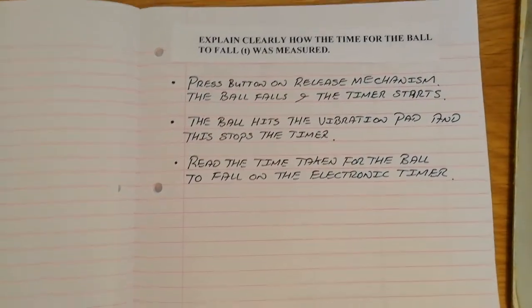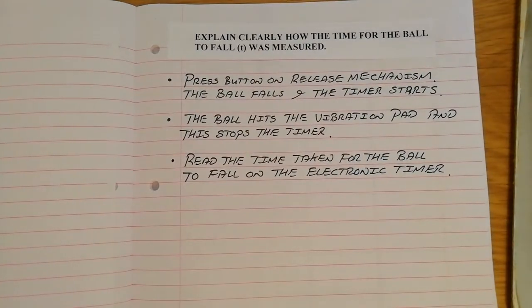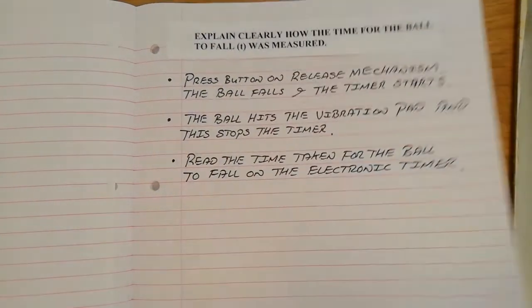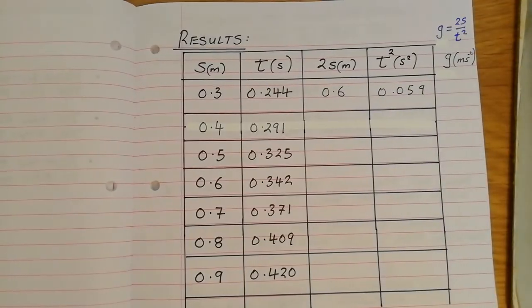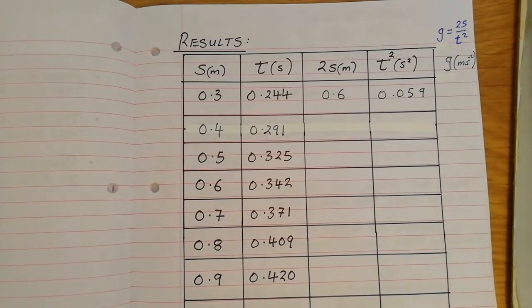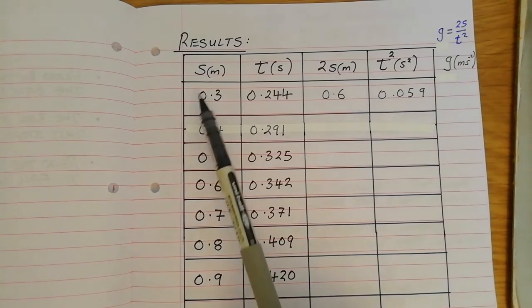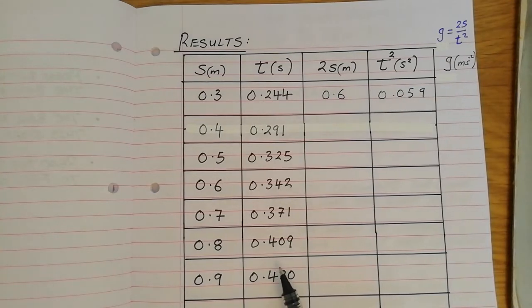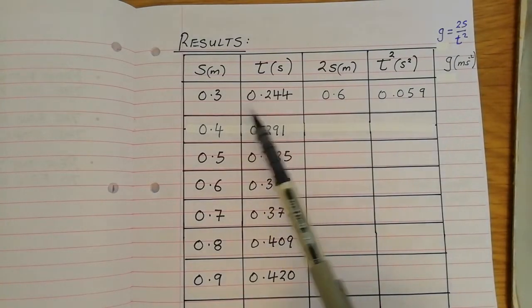Another thing that often comes up in exams is explain clearly how the time was measured. Well, you press the button, the ball falls, the timer starts, the ball hits the vibration pad, the timer stops, and you note the time on the timer. And then we looked at a sample set of results. Now, these results actually came from a fifth-year class some years ago. And they dropped the ball from different distances. They record the time on the timer in seconds.